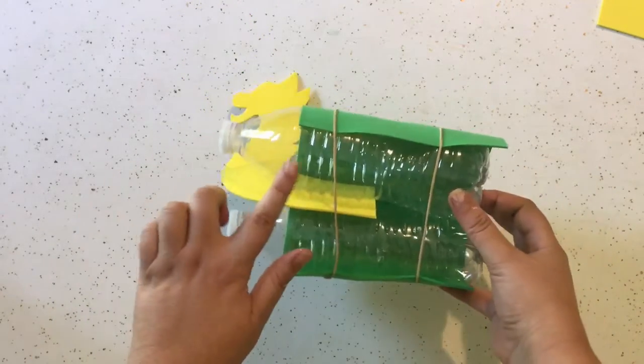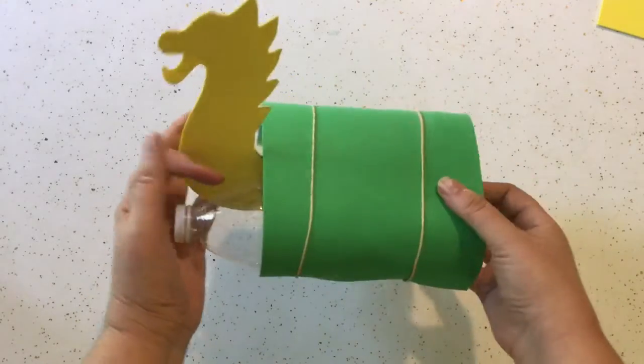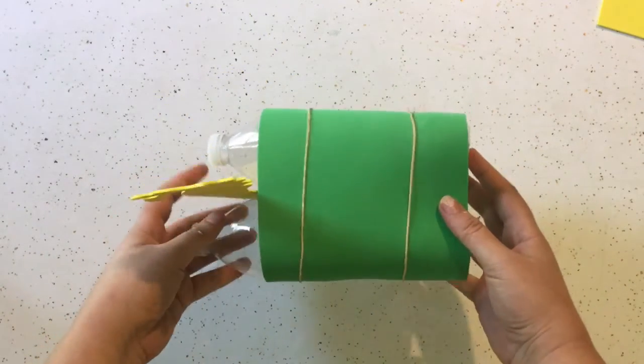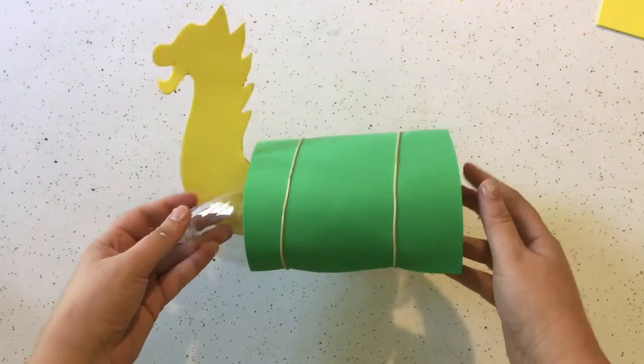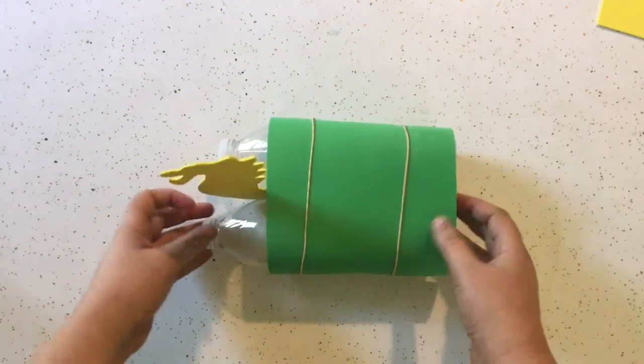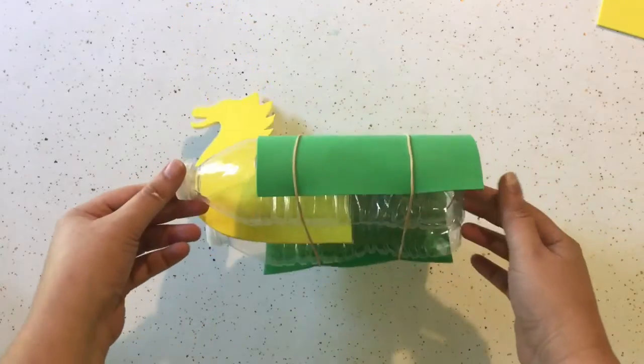Now because there's air inside these bottles, you could take this to your bathtub or to a lake and this would float just fine all on its own. We're going to add a few more things to it, but you have built a working boat.